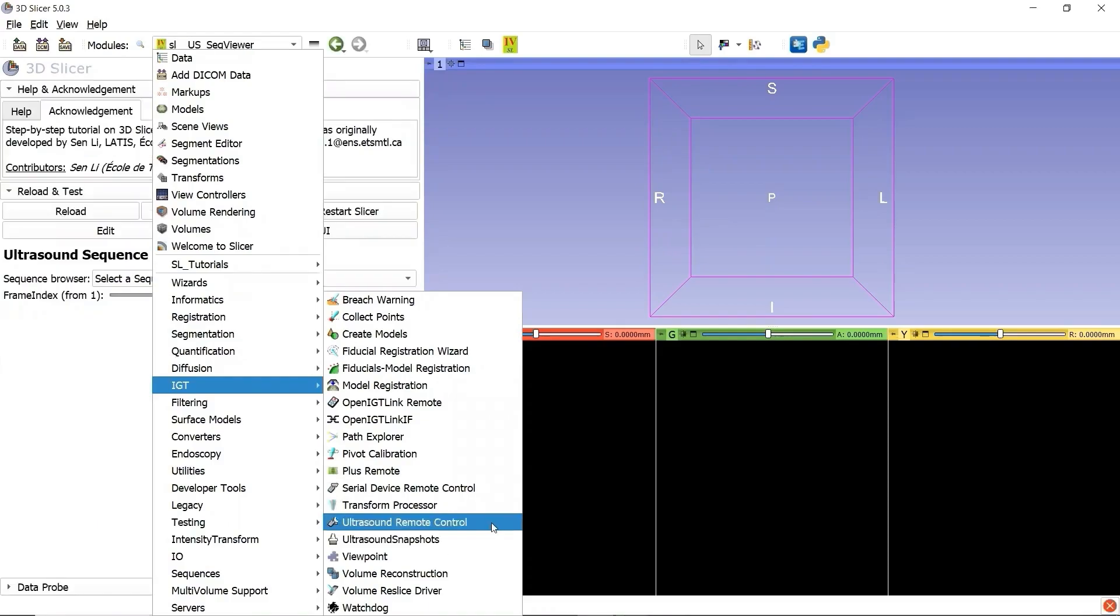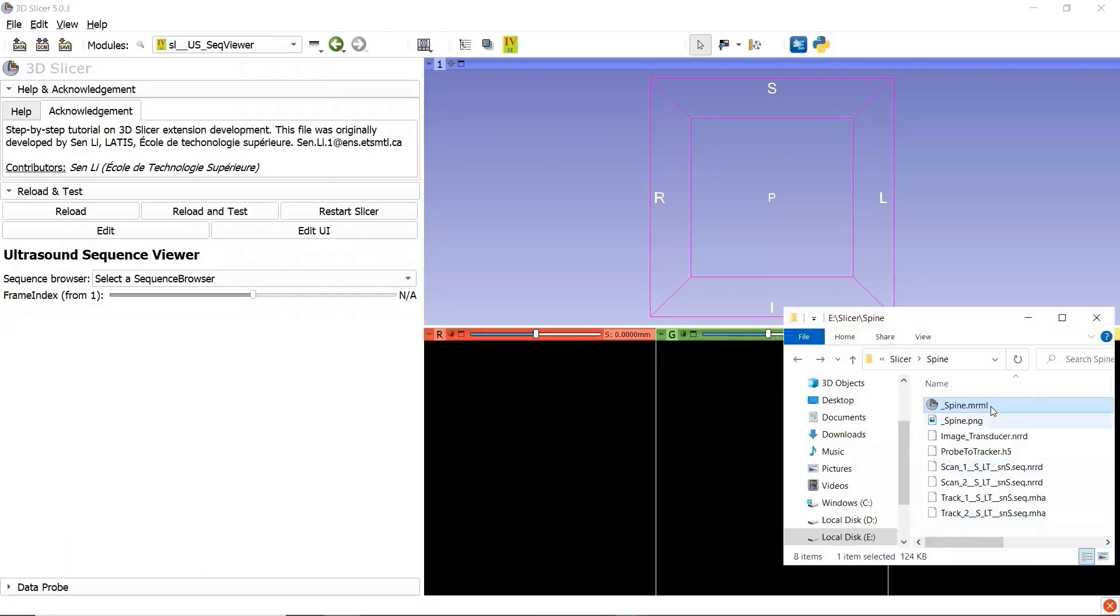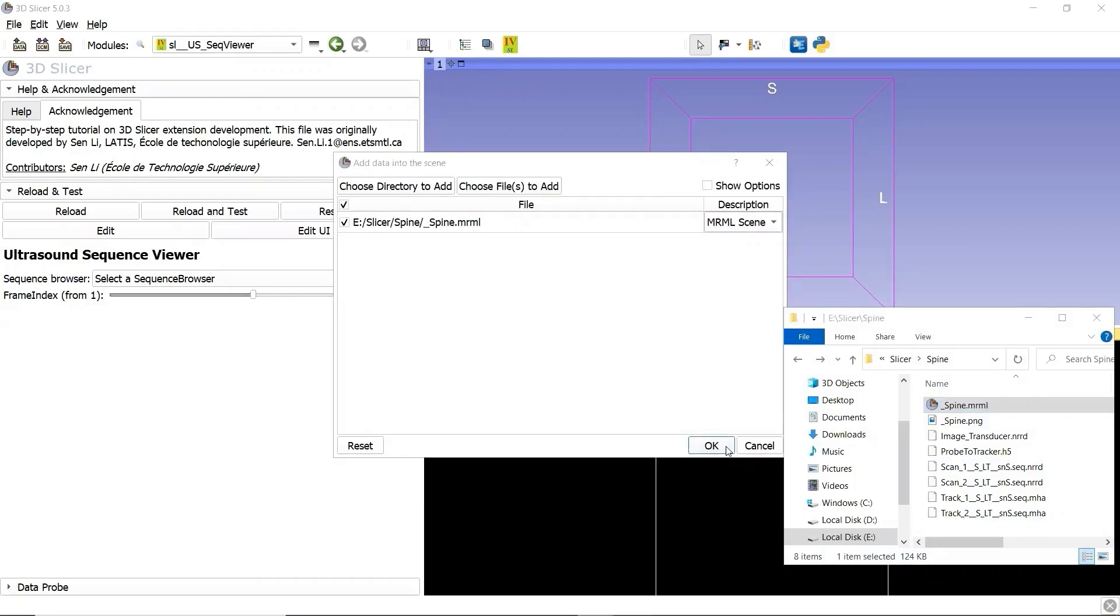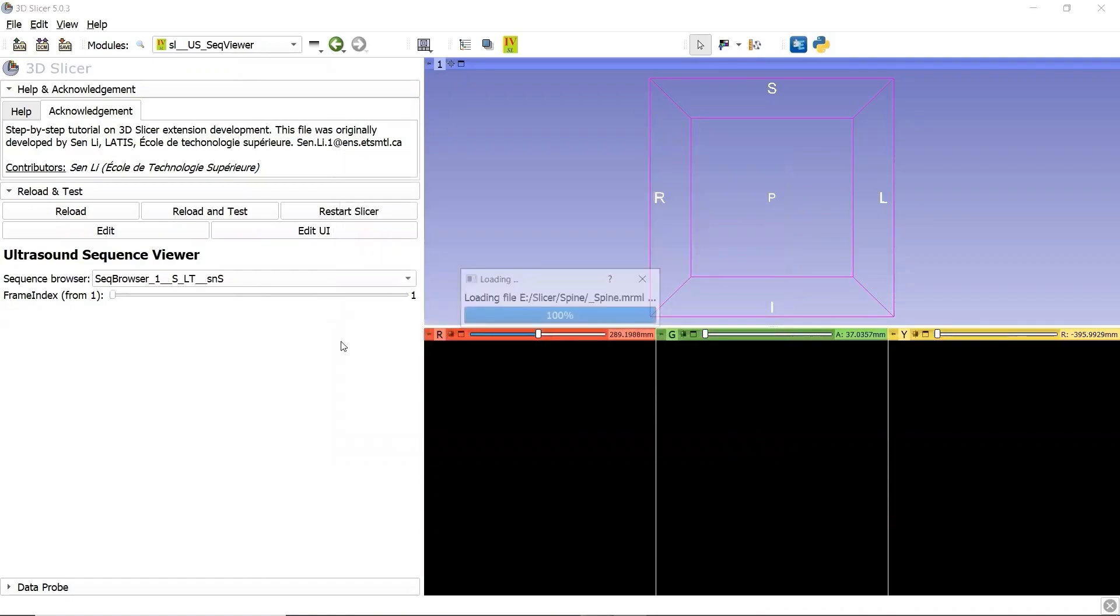Let's load an ultrasound sequence file. We go to our sequence viewer module, open our sequence file folder, and drag the sequence file to 3D Slicer. Click OK, and now we can view the ultrasound sequence images.